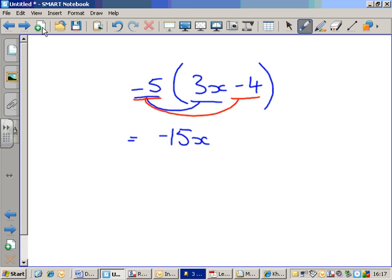And minus five times minus four, a negative multiplied by a negative will be positive. Five fours are twenty, so it's positive twenty. There we go.